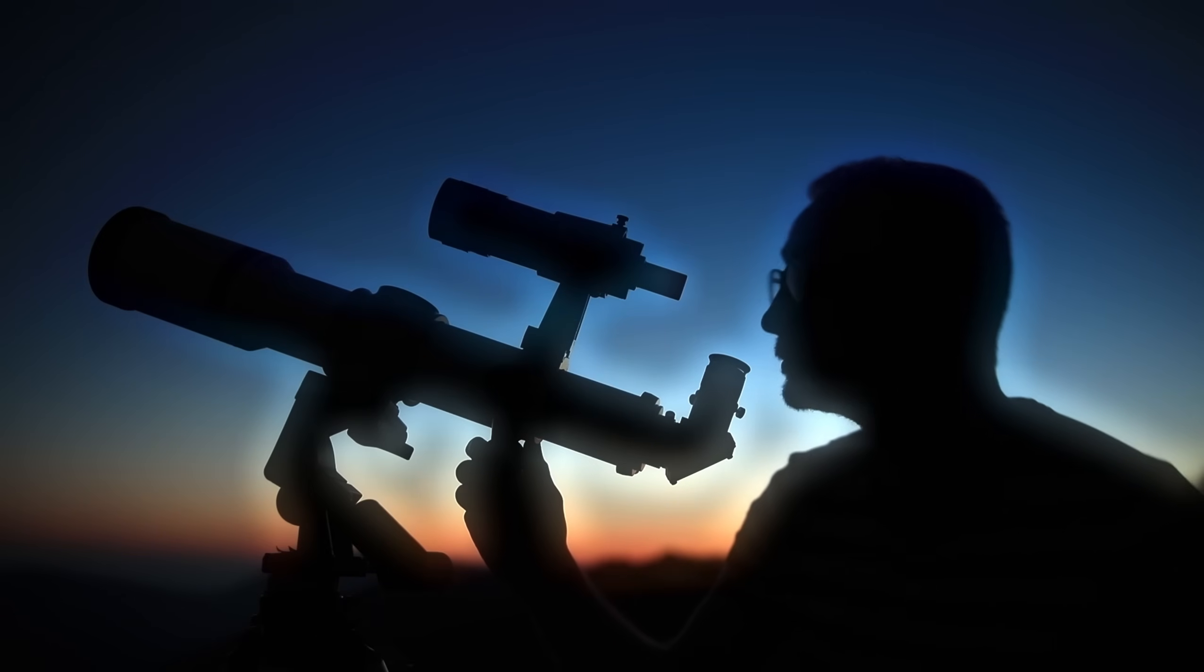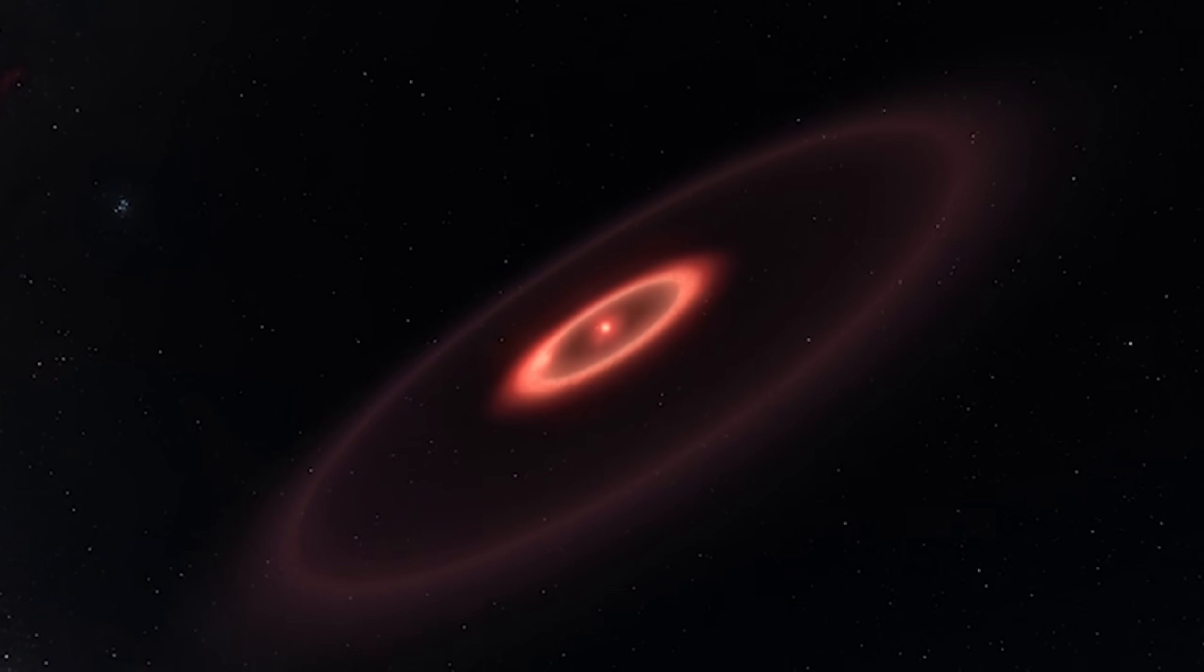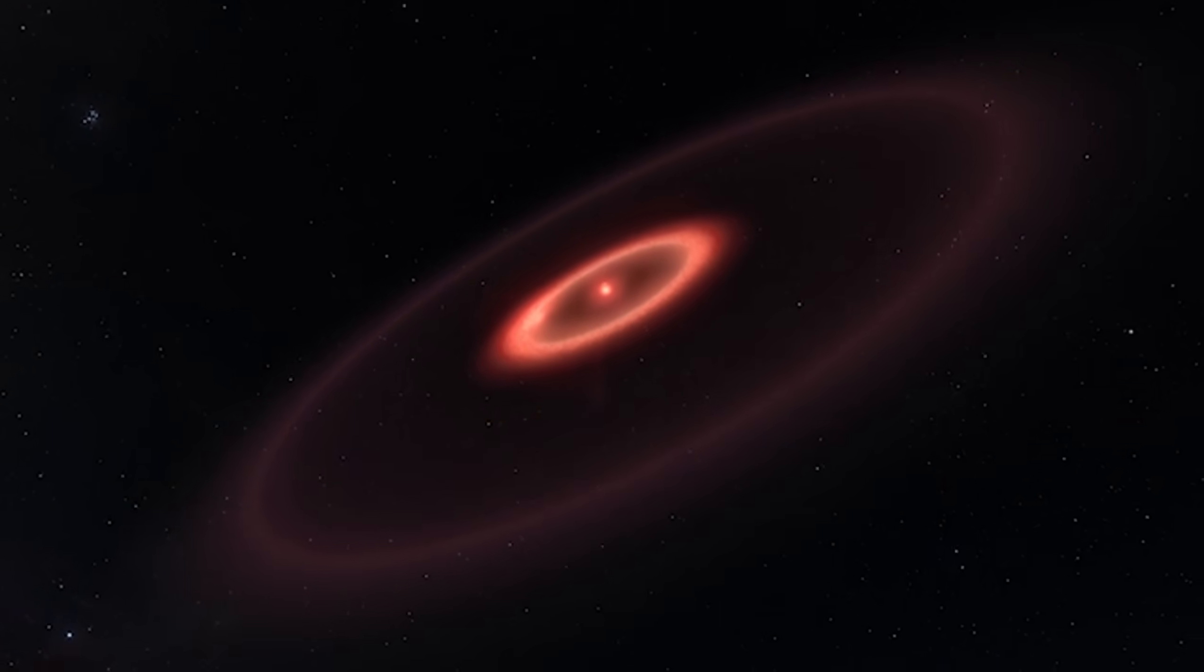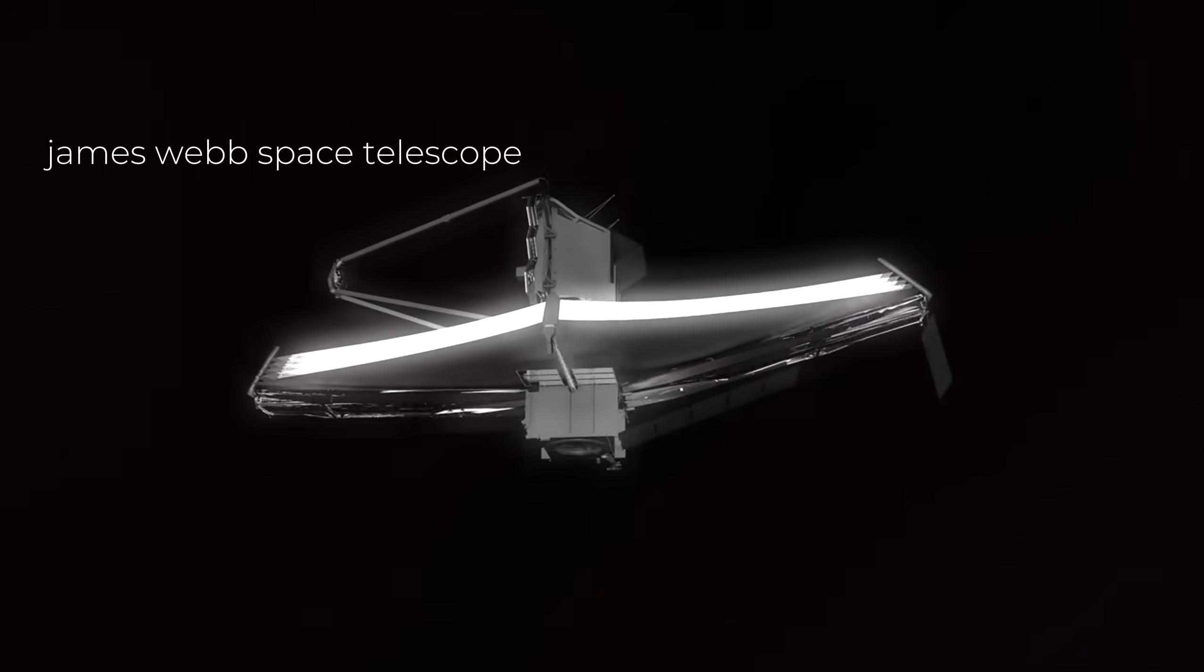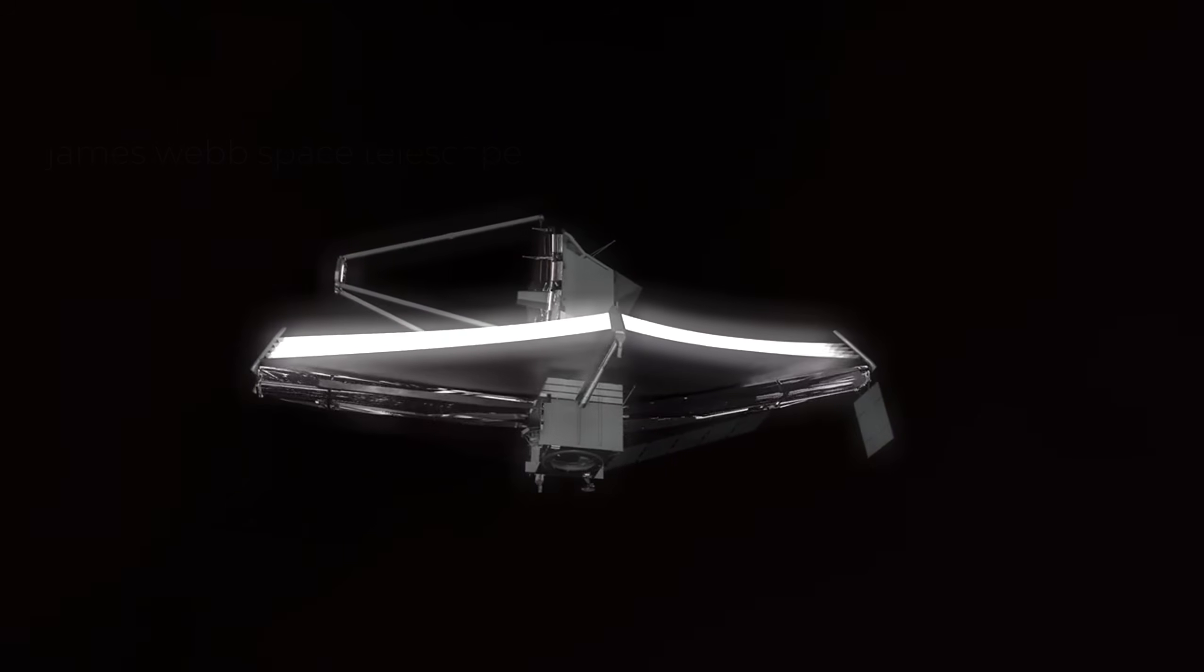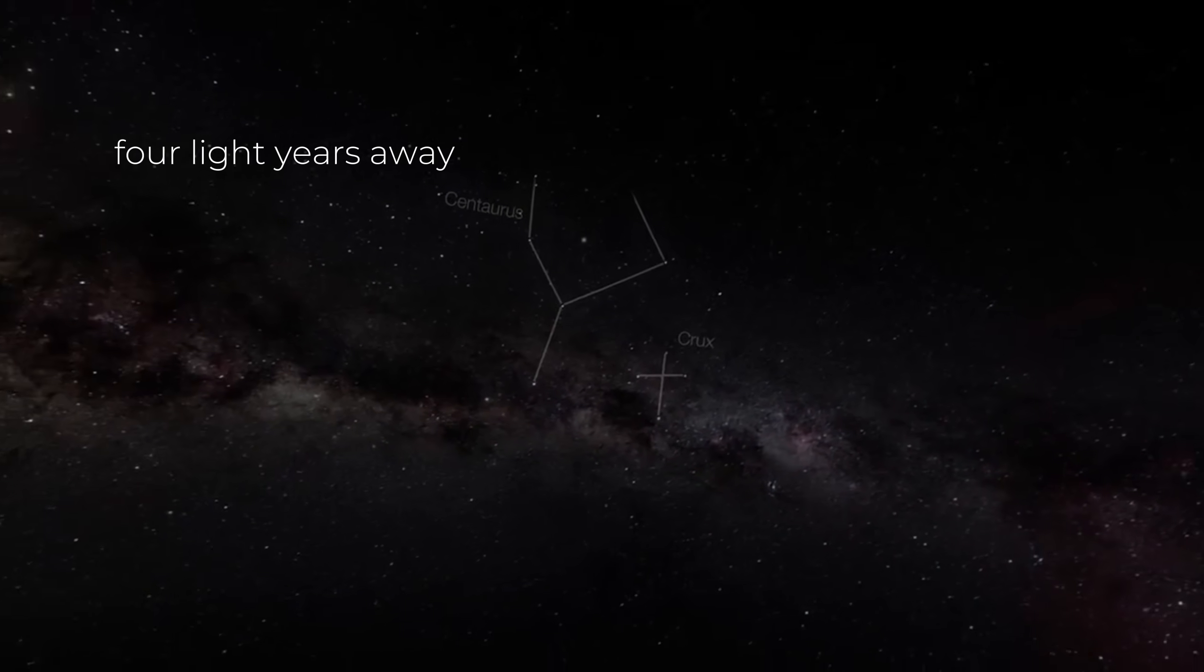The clearest image of Proxima B has just been revealed, glowing with lights that could change everything. Thanks to the James Webb Space Telescope, we now have a snapshot of this Earth-sized planet only four light years away, and it has caught scientists by complete surprise.